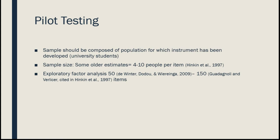Once we've chosen items, decided on the scale format, figured out scoring, and written directions, it's time to pilot test the instrument. We want our pilot test sample to be composed of the population for whom the instrument was developed — so for a university student drinking scale, we'd use university students. There's disagreement about sample size: older estimates suggest 4 to 10 people per item; newer ideas using exploratory factor analysis suggest 50 to 150 people.